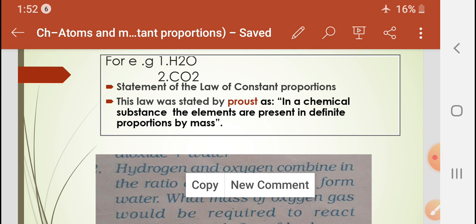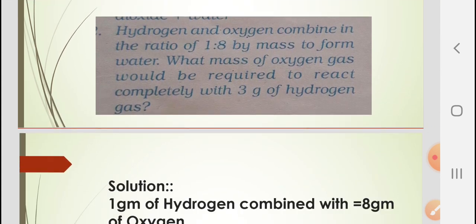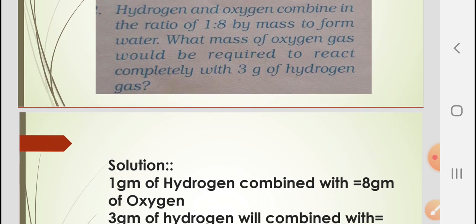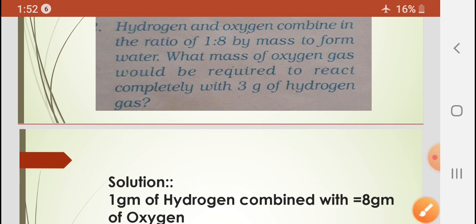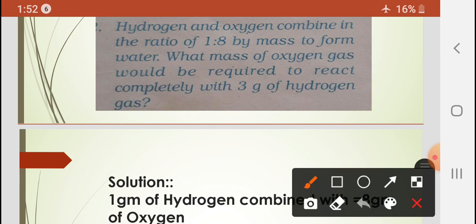Now let us solve a few numericals based on this law. The first numerical is straightforward. The statement is: hydrogen and oxygen combine in the ratio of 1:8 by mass to form water. What mass of oxygen gas would be required to react completely with 3 grams of hydrogen gas?